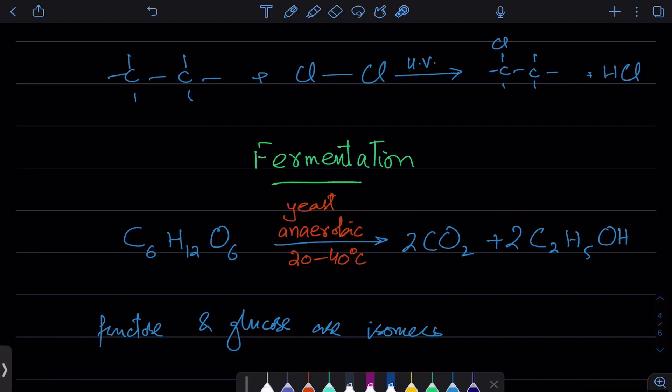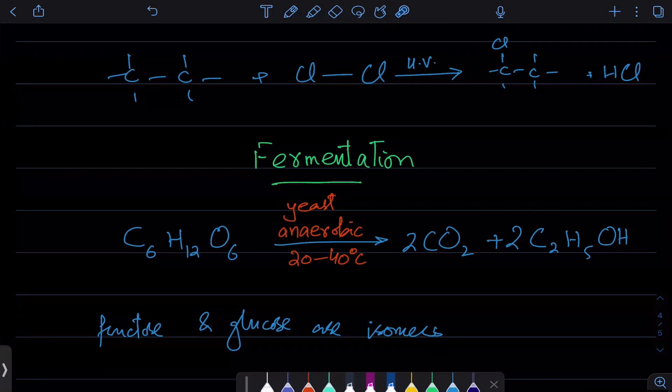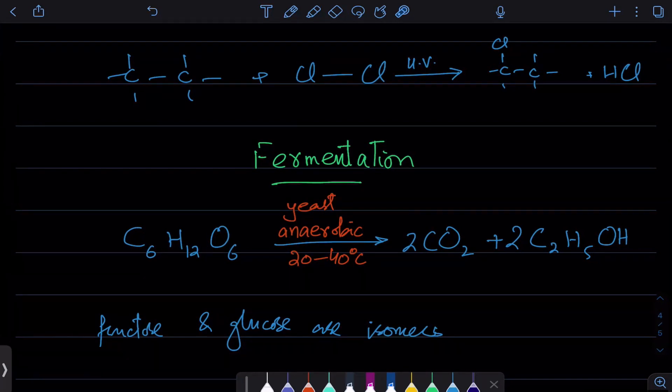It's also used to produce drugs and different medicines. So these are the main applications of ethanol and it's really easy to make. You take glucose, you can get it from anything that has sugar in it, and that will convert it to ethanol.